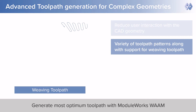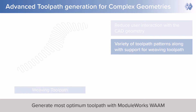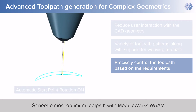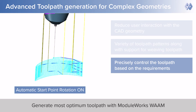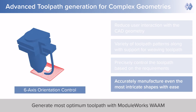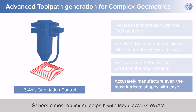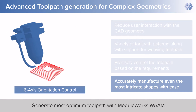Various approaches are possible for toolpath pattern definition using curves, surfaces, or meshes. Weaving patterns can also be generated to manufacture components with varying thickness and wall structures. The solution includes features such as automatic start point rotation, allowing for greater toolpath control and preventing material deposition at a single point. Advanced features like six-axis orientation control, which is very important for WAM, enable users to accurately control the process and generate the most optimum toolpath.